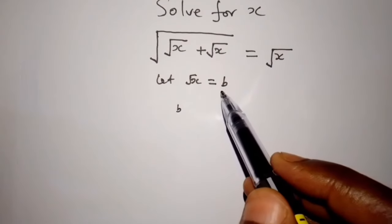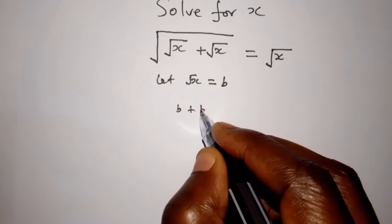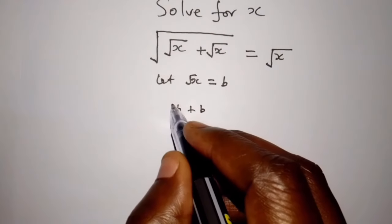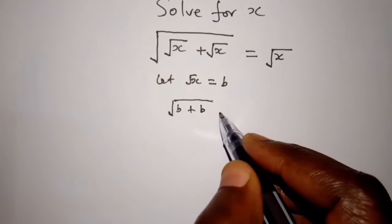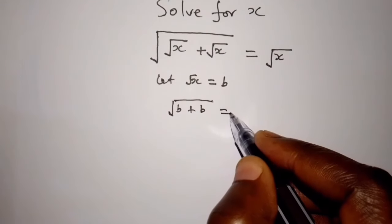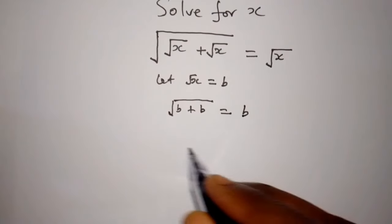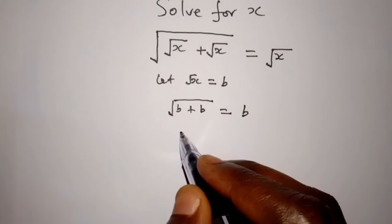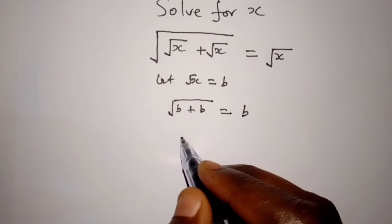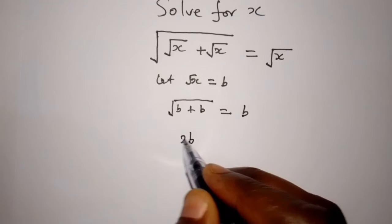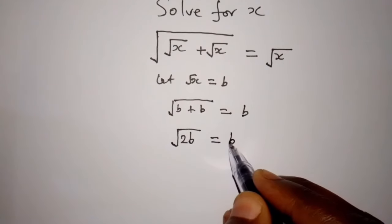Substituting x with b, we get b plus b square root of b plus b is equal to b. This gives us a 2b inside, so square root of 2b is equal to b.